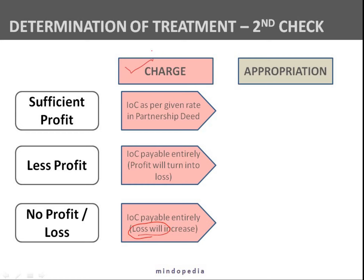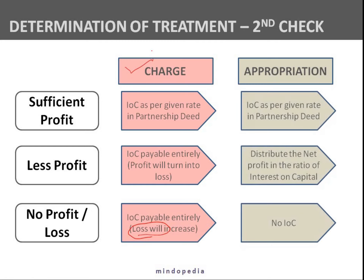In the case of less profit, we distribute the profit in the ratio of their interest on capital. That part is a little tricky and we will discuss it in detail. In the no profit or loss condition under appropriation, no interest on capital shall be given to the partners. If there is a loss, nothing will be given at all.